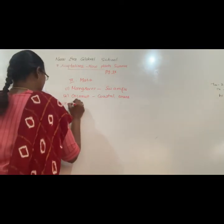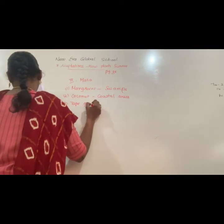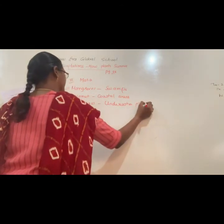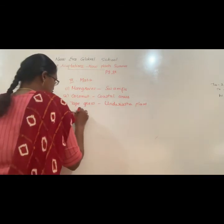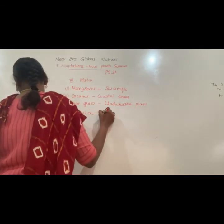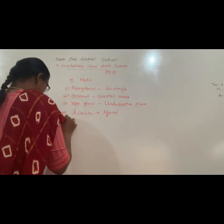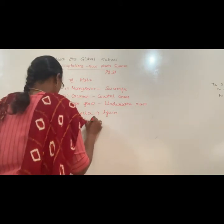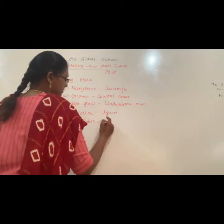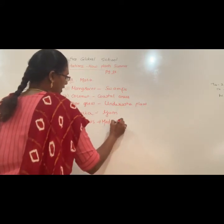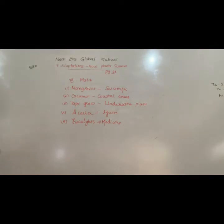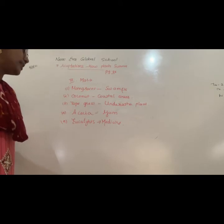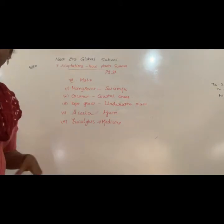Third one — tapegrass: tapegrass is an example of an underwater plant, that is option A. Fourth one — acacia: acacia is a gum plant. Fifth one — eucalyptus: eucalyptus is a medicinal plant. So mangroves grow in swamp regions, coconut in coastal areas, tapegrass as underwater plant, acacia is gum and eucalyptus is medicine.